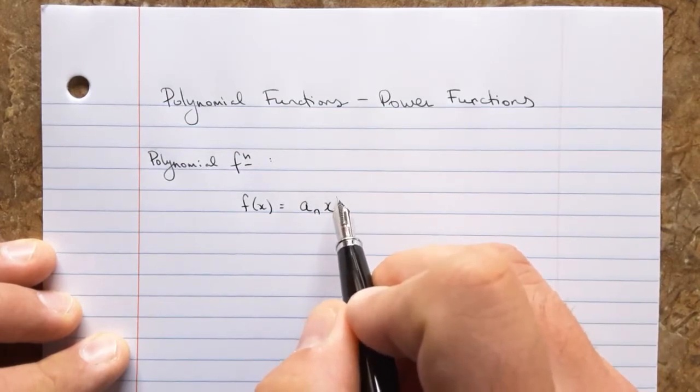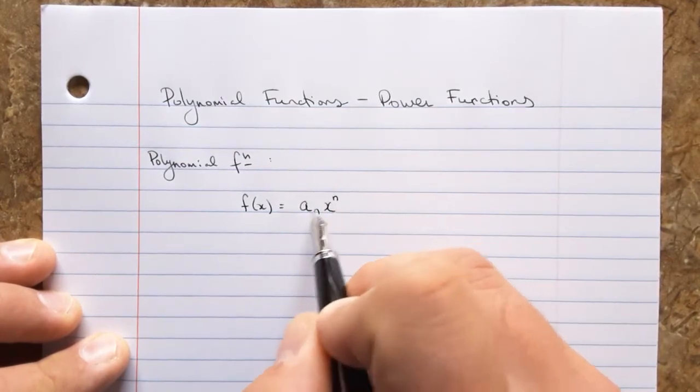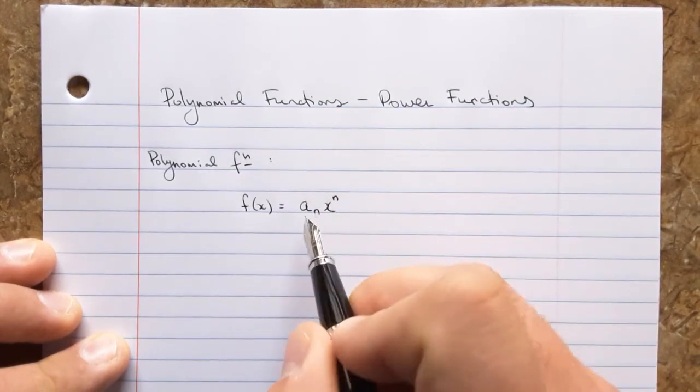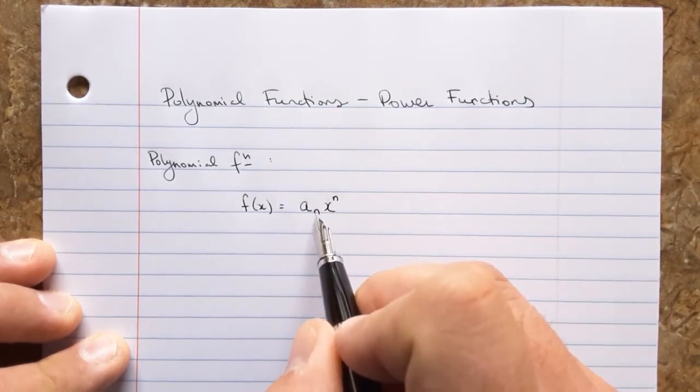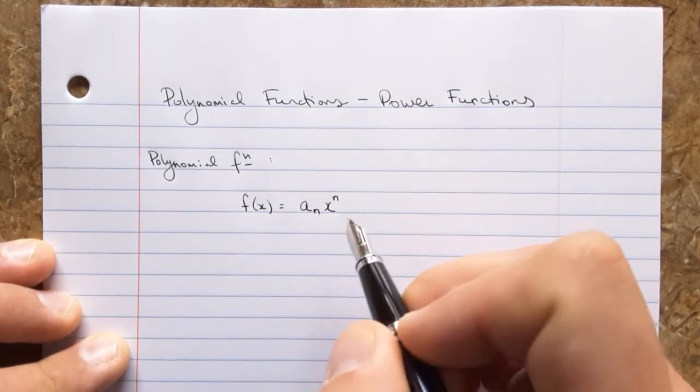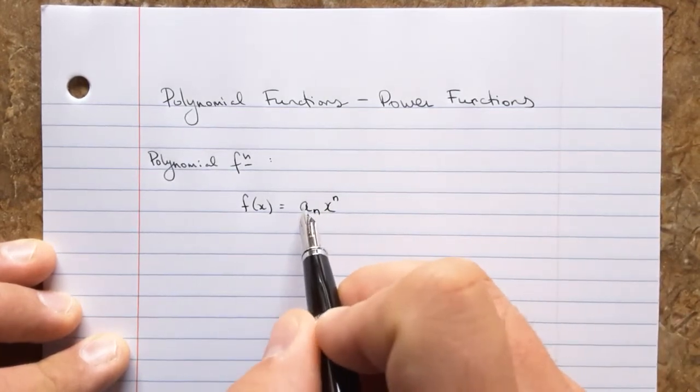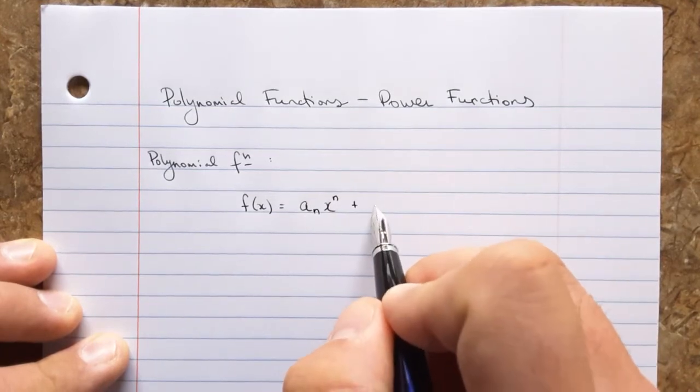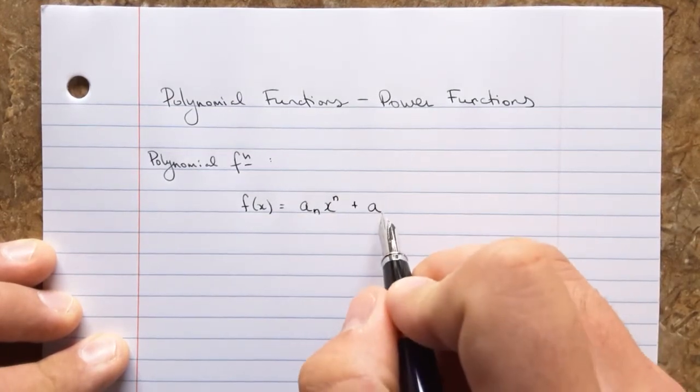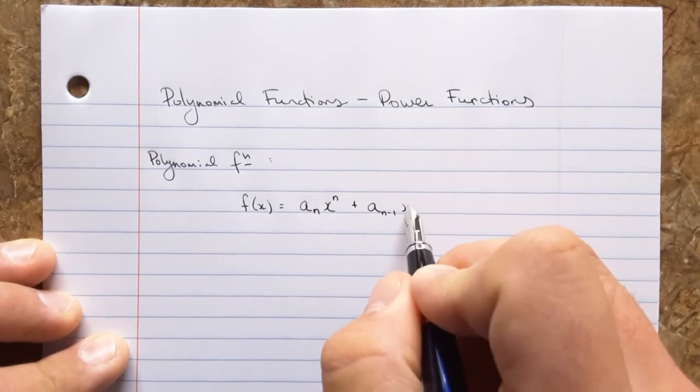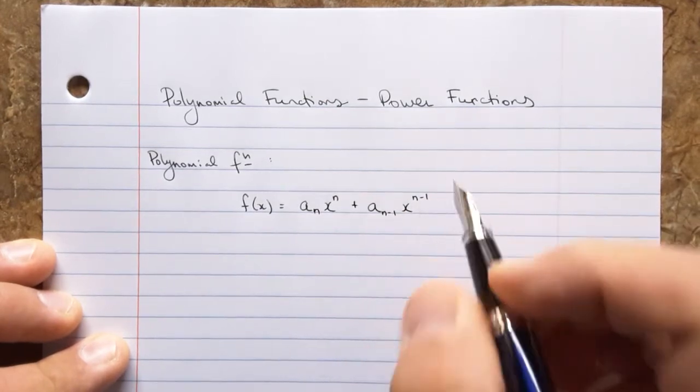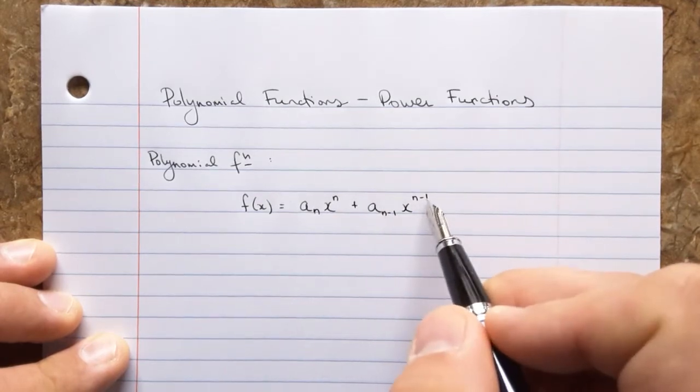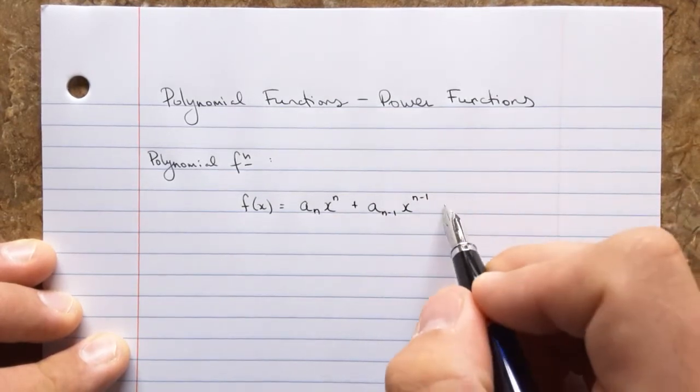Each term has a coefficient. So here we describe the first term, the leading coefficient is a sub n. That's a little subscript. So if this was like a fifth degree polynomial, this would be a5 and then x to the fifth. And we continue to the next one, n minus one. And the exponent is n minus one. So this would be like the fourth term coefficient, and this would be the number four, five minus one, and so on.